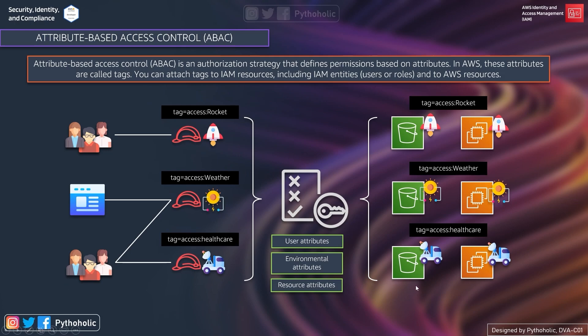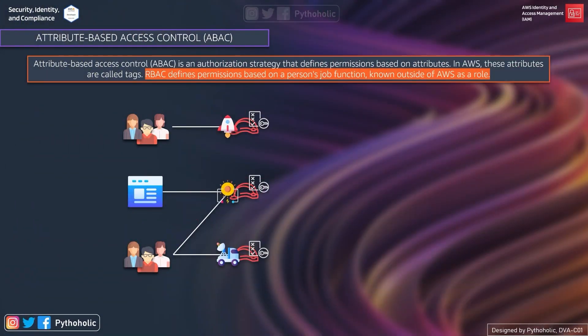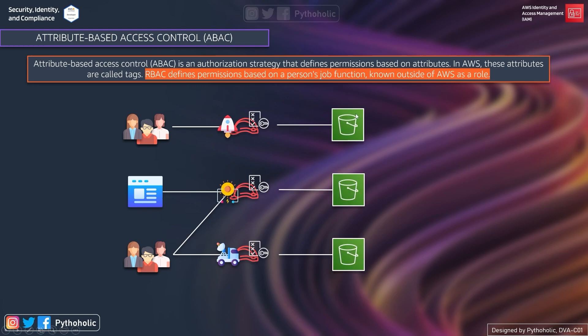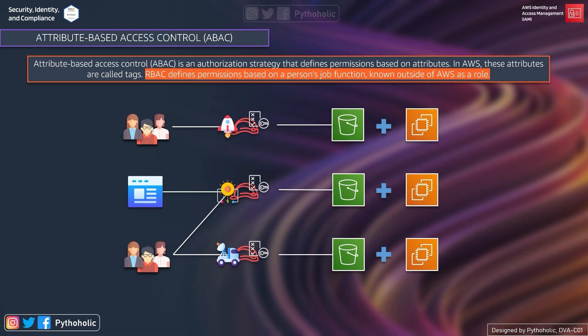Comparing RBAC and ABAC: in RBAC, you have policies attached to the role based on your job function. The policy grants permission to access resources like S3. If your project evolves and needs EC2, you have to update the policies, and that update must be applied across all affected principals. That's the major difference between RBAC and attribute-based access control.